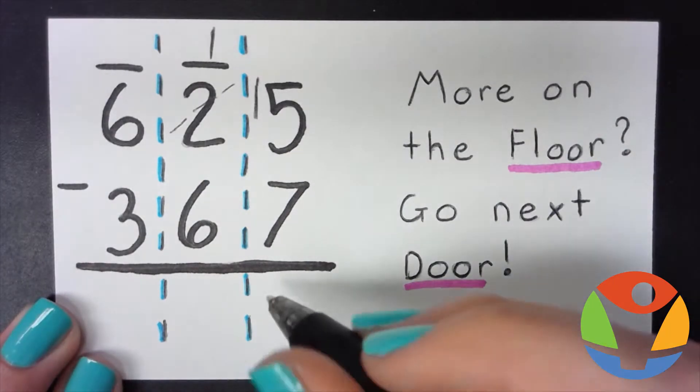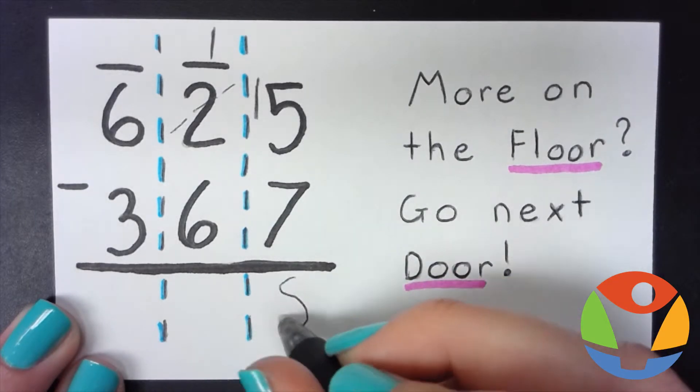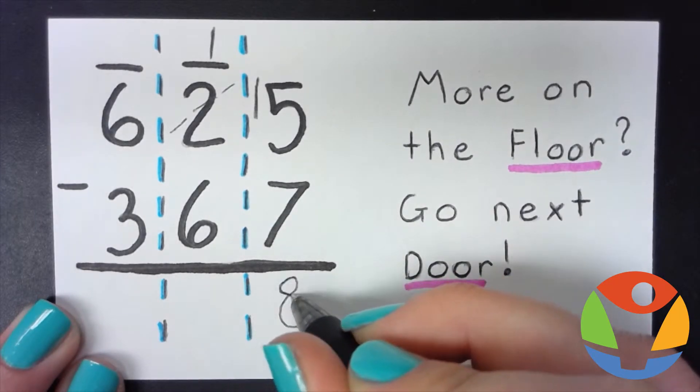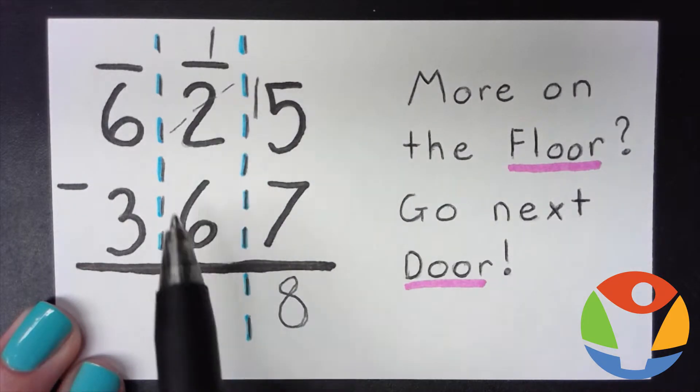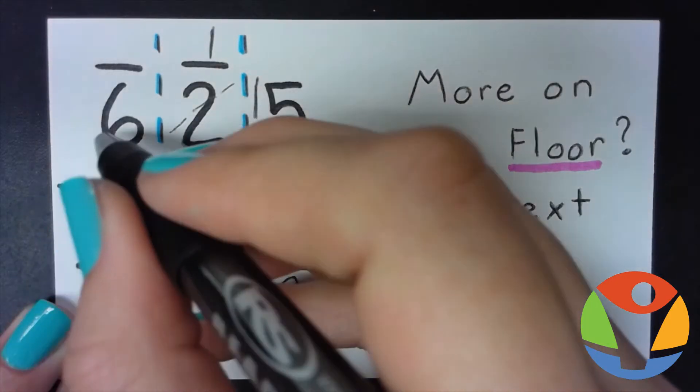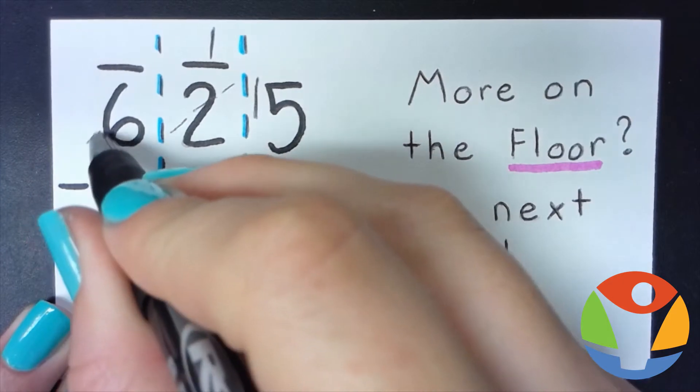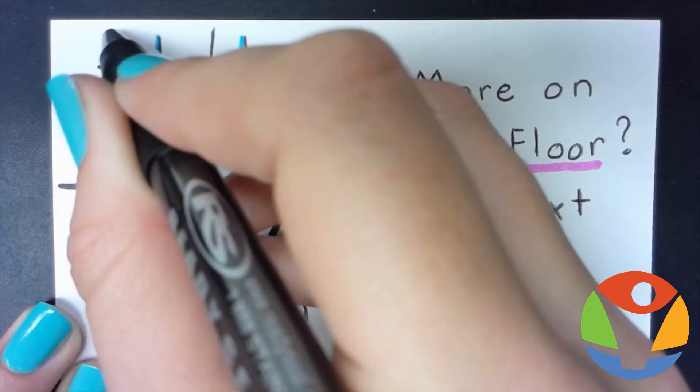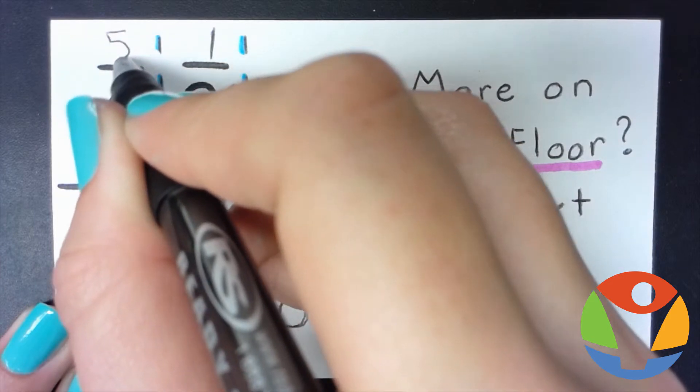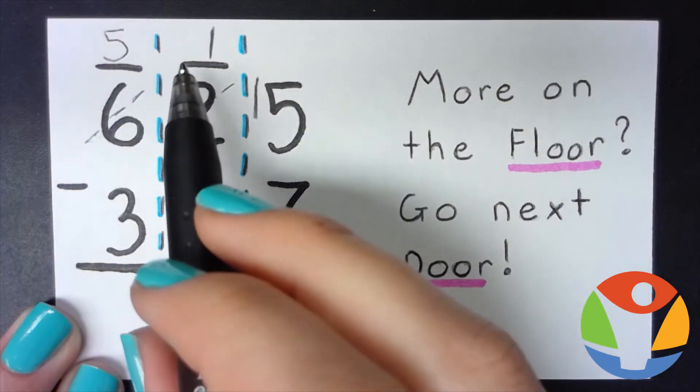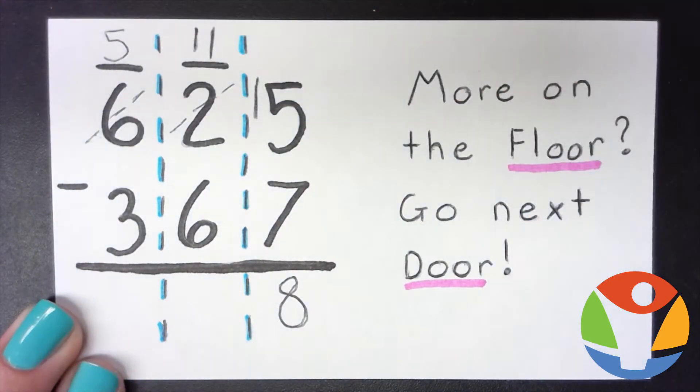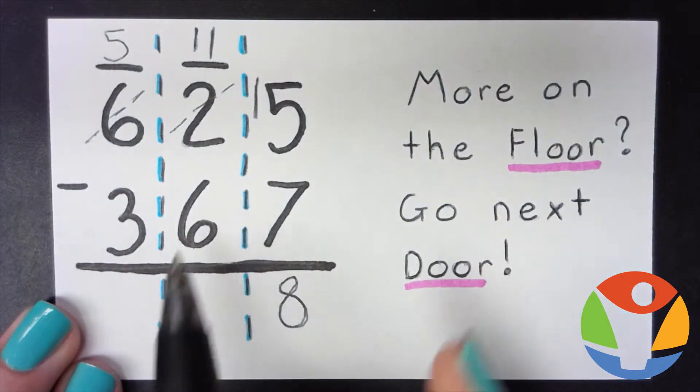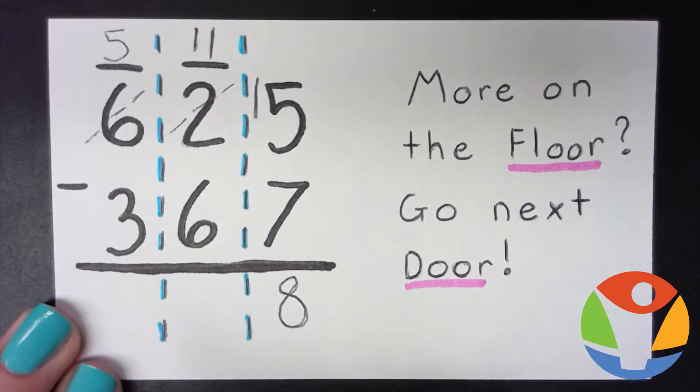Now we have one minus six. One is less than six, so we're going to borrow from the six over here. Cross him out and make that a five. Now we're going to bring a one right in front of this one. So now that is 11 minus 6. That gives us five.